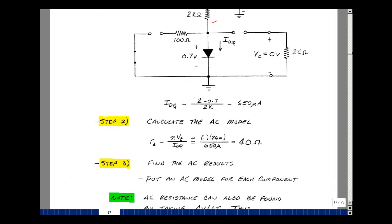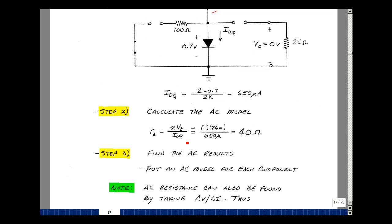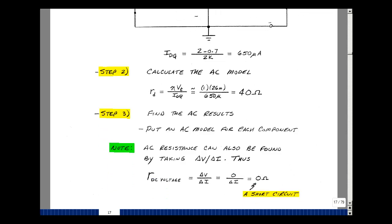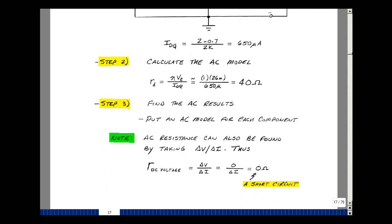The second step in our algorithm was to find the AC model, and that's eta V_T over I_DQ. For silicon, eta is between 1 and 2. We're assuming here that's equal to 1. V_T is around 26 millivolts at room temperature, and I_DQ is 650 microamps, so you get about 40 ohms. Step 3 is to find the AC results. We're going to put an AC model in for each component. An AC voltage source is still an AC voltage source, but what about a battery? We can think about AC resistance as the change in voltage over the change in current. The resistance of a DC voltage source would be that. But what's the change in voltage across the DC voltage source? Well, it's 0. But there is a change in current, current coming out of it which is eventually going to go into the diode, into the load. That ratio is equal to 0. A DC voltage source looks like a short circuit for AC.